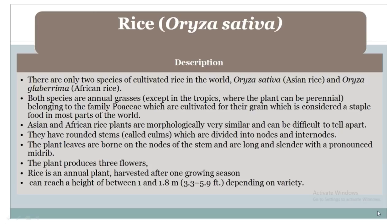The plant produces three flowers. Rice is an annual plant harvested after one growing season and can reach a height of between 1 and 1.8 meters (3.3 to 5.9 feet) depending on variety. Vertebrate pests of rice include field rats, mole rats, bandicoot rats, and birds.